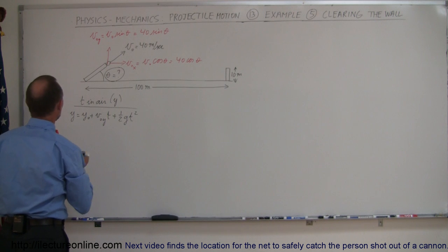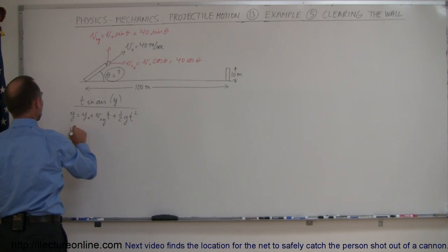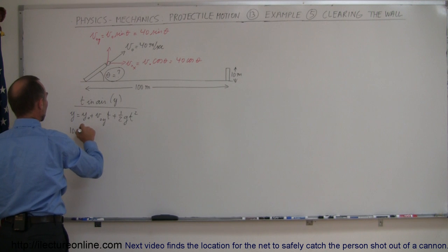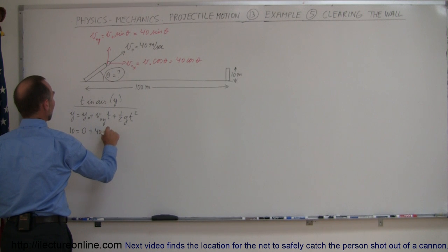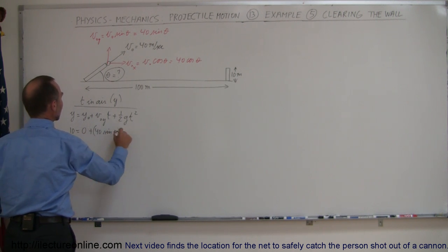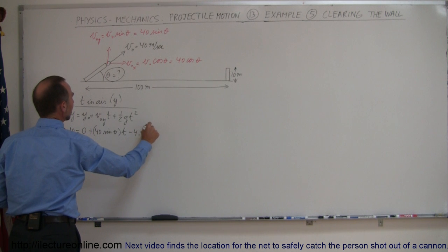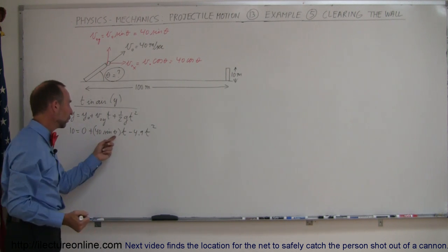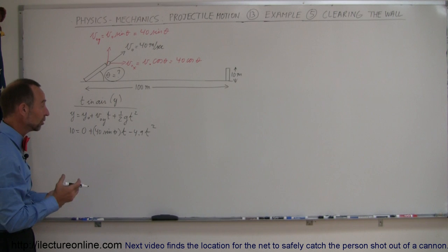Plugging in everything we know: the final height must be the height of the wall, which is 10 meters. Initial height is 0. So: 10 = 40sin(θ)·t − 4.9t². We don't know the angle and we don't know t — two unknowns in this equation — so we cannot solve it for t alone.